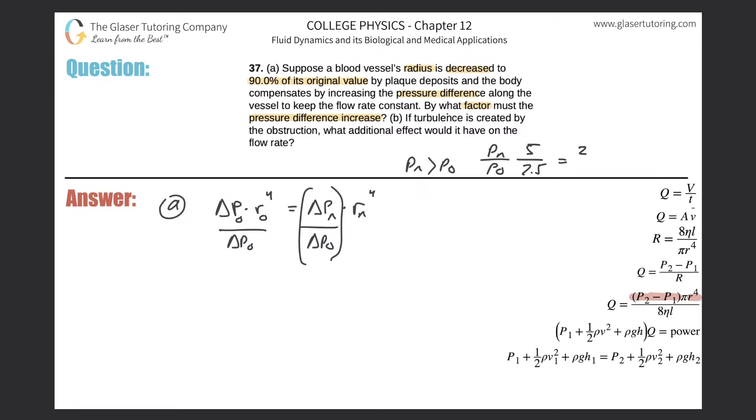I'm going to divide out my delta P_o from both sides and bring this over to the other side as well. Essentially, divide this out by r_n to the fourth and divide this out by r_n to the fourth. We are now left with this equation: r_o to the fourth over r_n to the fourth will equal delta P_n over delta P_o.